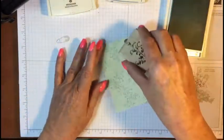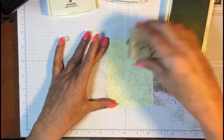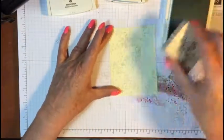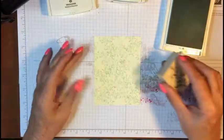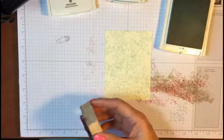Just kind of go all over, flip your stamp around, bring it in, make it go out, just play with it. Wherever you want it to go, it doesn't have to be perfect. We're gonna clean that stamp off.